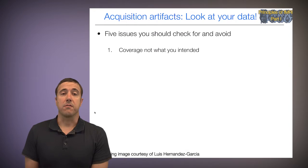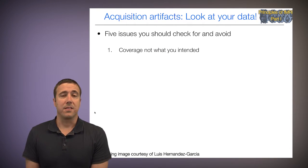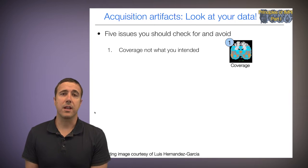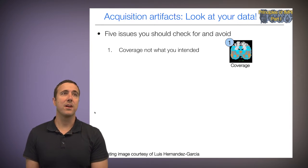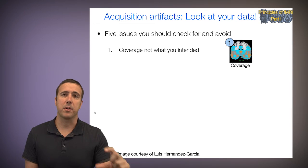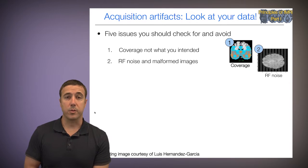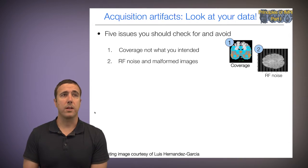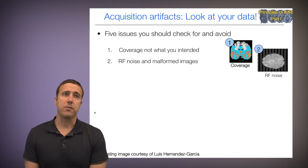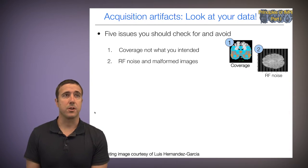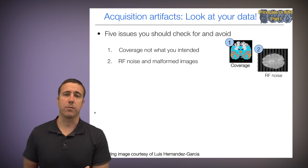Here are some common kinds of acquisition artifacts — things you can look for in your data and hopefully avoid if they're present. First, very basic: check and make sure that the brain coverage you're getting is what you intended. Here, the top part of the brain has not been acquired, and you cannot fix that later. Number two, RF radio frequency noise and malformed images. This is one example of a case-based artifact with RF noise at particular frequencies, showing up as bands across the image. There are many other ways in which images can be malformed or have gone wrong.